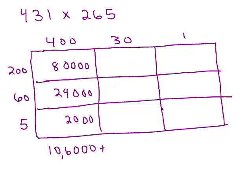So 30 times 200, there's 3 extra zeros. And 3 times 2 is 6. So 30 times 200 is 6,000. And then we've got 30 times 60. We've got 2 extra zeros. 3 times 6 is 18. And then 30 times 5, we have 1 extra zero. 3 times 5 is 15. So let's add that up. We've got the 5, 9, and 7.